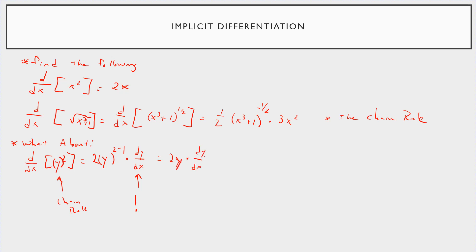So this becomes 2y times dy/dx. The reason we do that is because we're asked to find the derivative with respect to x, and there's a y there. We're going to assume that y is some function of x. And if it's not, then dy/dx is just 0 and it goes away. So all you're going to have to do for implicit differentiation — this is important — whenever you differentiate with respect to x and it's a different variable like y, you take the derivative as you normally would and then tack on a dy/dx.